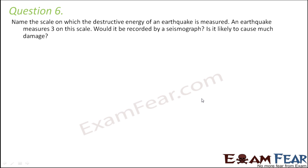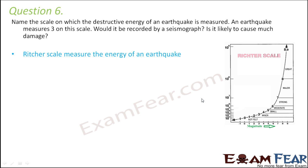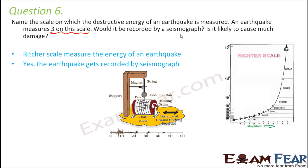Question number 6: Name the scale on which the destructive energy of an earthquake is measured. The Richter scale. On the Richter scale, the magnitude is on the x-axis and the amplitude of seismic waves caused by the earthquake is on the y-axis. As the magnitude increases, the destructive energy also increases. Now, an earthquake that measures 3 on this scale — would it be recorded by a seismograph? Yes, even very minor earthquakes are recorded because seismographs have devices that can amplify seismic waves so that even minor tremors can be recorded.